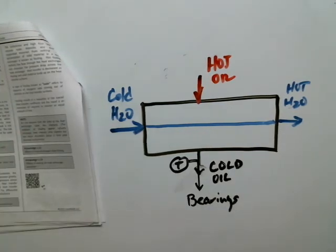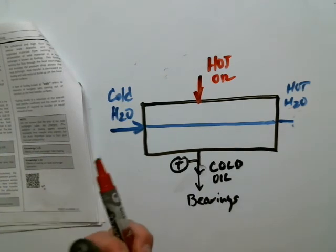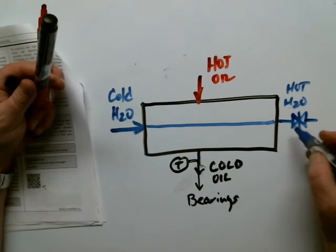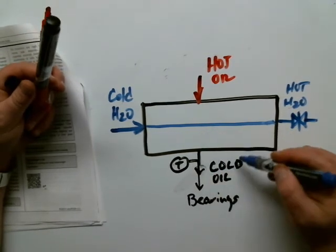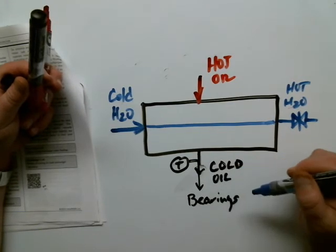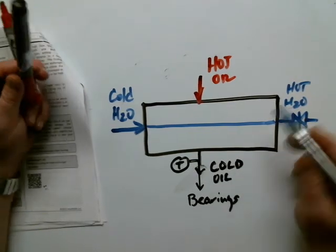So what I'll do is I'll usually have a valve on the outlet of the heat exchanger that I can throttle to control how much cooling water flow I have through the heat exchanger. And that will adjust how much cooling occurs on this oil.